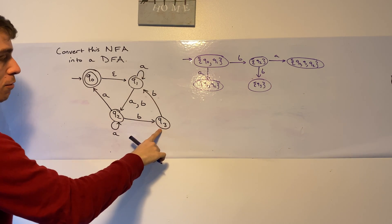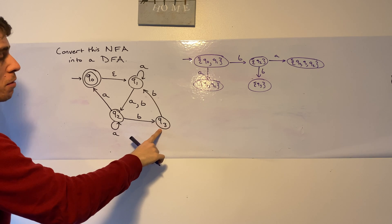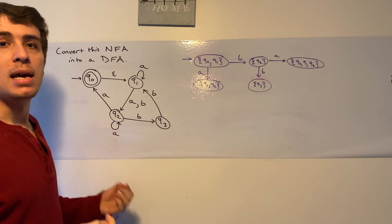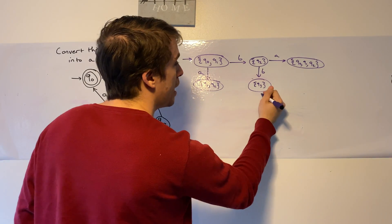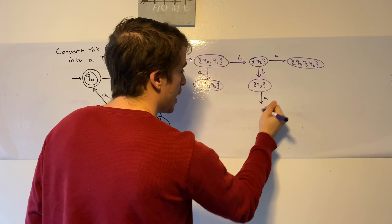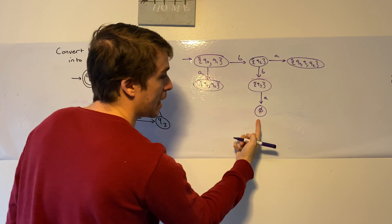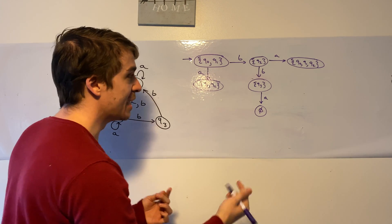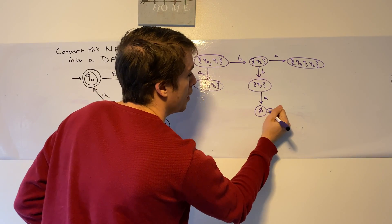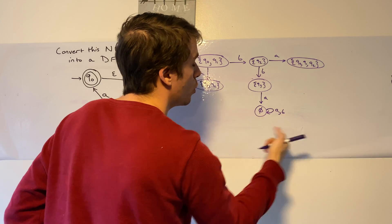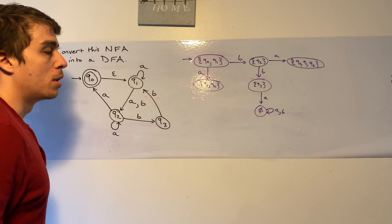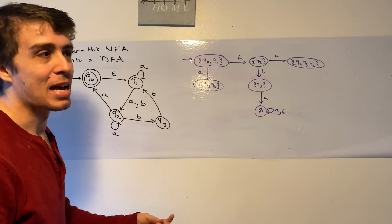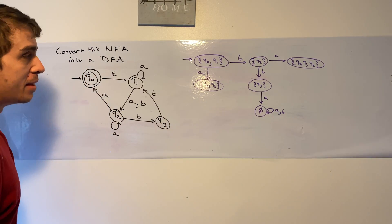Now let's look at Q3 going on A. Q3 can't go anywhere on A. So the set of states we could be in is empty, which means we're going to make a dead state — the empty set. Whenever you have this, you always have a self-loop on A and B, because if you're not in any state and you try to read an input, you can't go anywhere. So that's done.